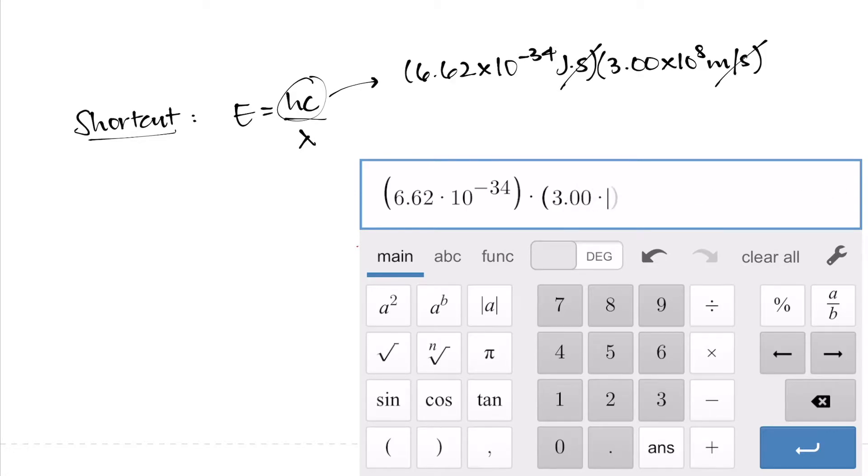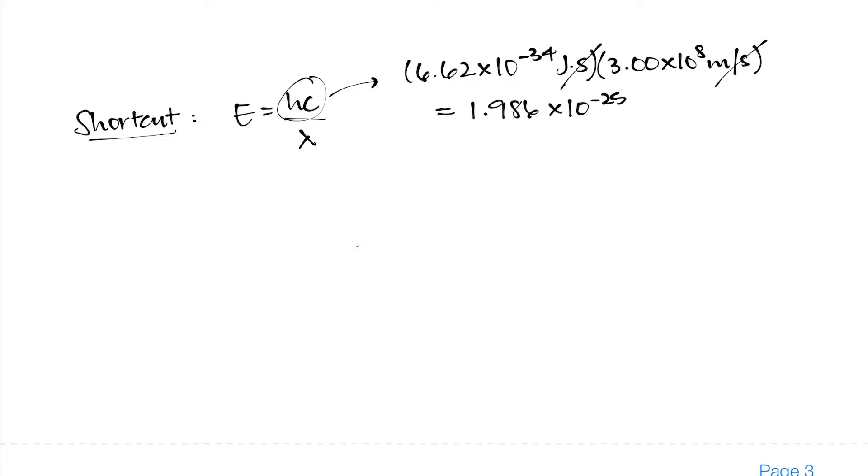And when I multiply these numbers together, I get 1.986 times 10 to the power of negative 25 joules times meters, which is a lot easier to use because now there's one less step we need to follow. But I don't want to memorize 1.986 times 10 to the power of negative 25 because what sort of a shortcut is that?